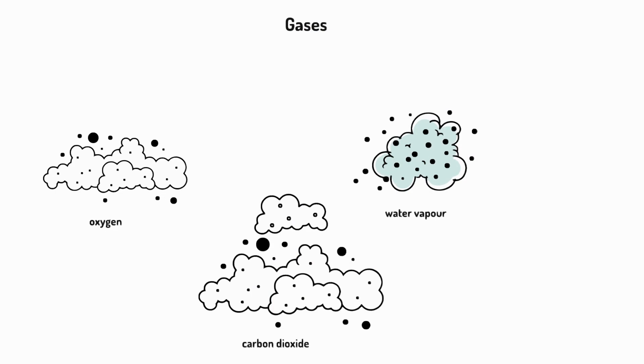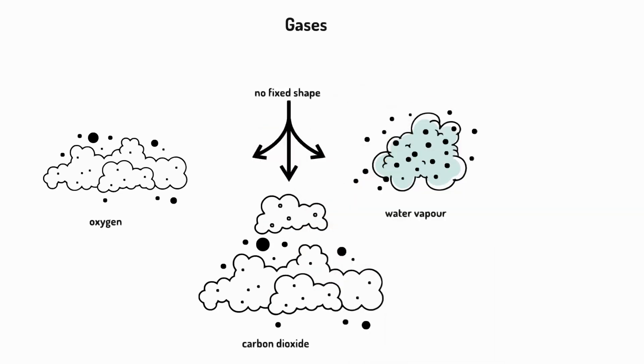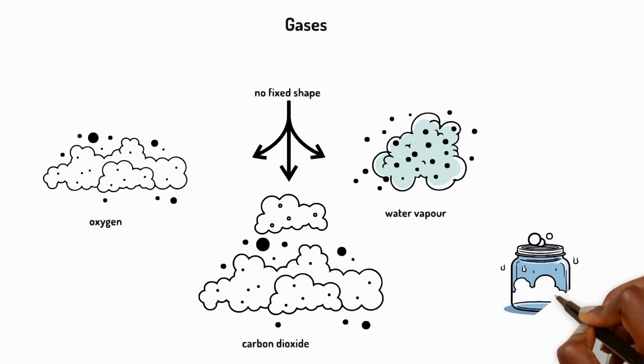So we can't see them, even though they're all around us. Gases don't have a fixed shape and spread out to fill their container. If there's no lid or cover, they escape.